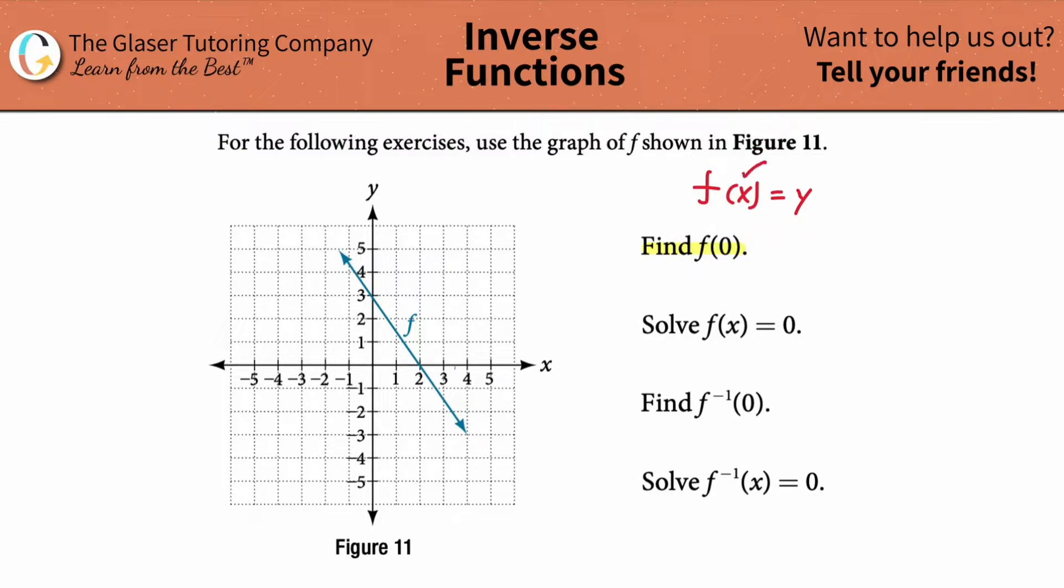So what is inside the parentheses represents x, and what this thing will be equal to will represent y. So to restate this in another way, this would basically be saying, find the value of y when x is equal to 0. So what I'm going to do here, I'm going to write it like this: f of 0 equals y.